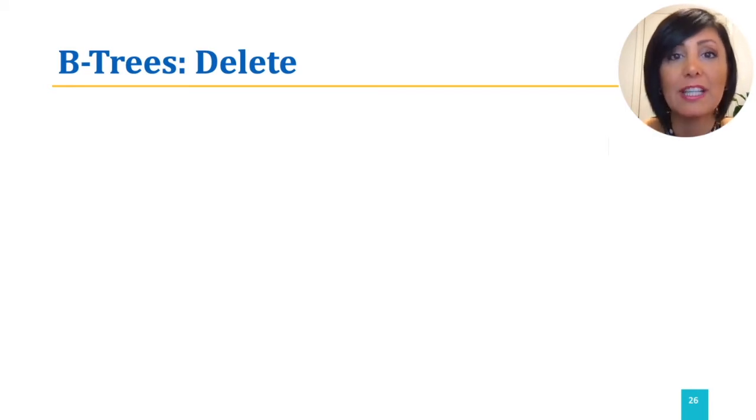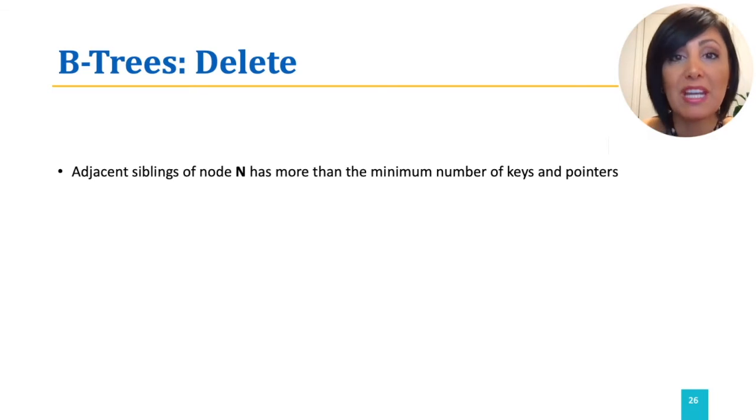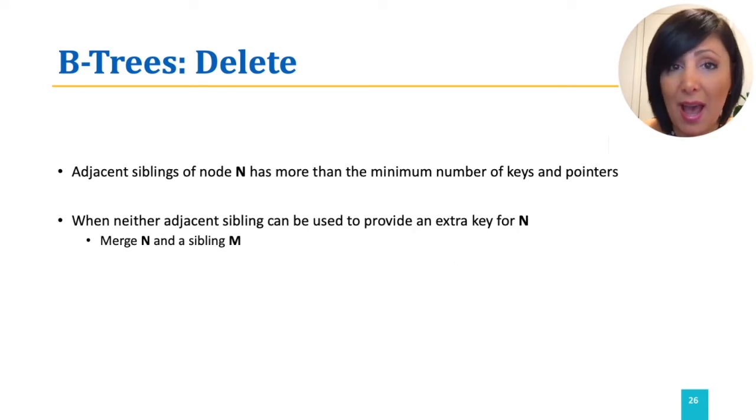In occasions where the leaf node that the DELETE happens on is at the minimum occupancy threshold, the DELETE will cause the node to go below the occupancy threshold. To keep the occupancy order requirements, the node needs to either do a redistribution of entries from the adjacent sibling node, or a merge with the adjacent sibling node needs to happen to keep the occupancy threshold.